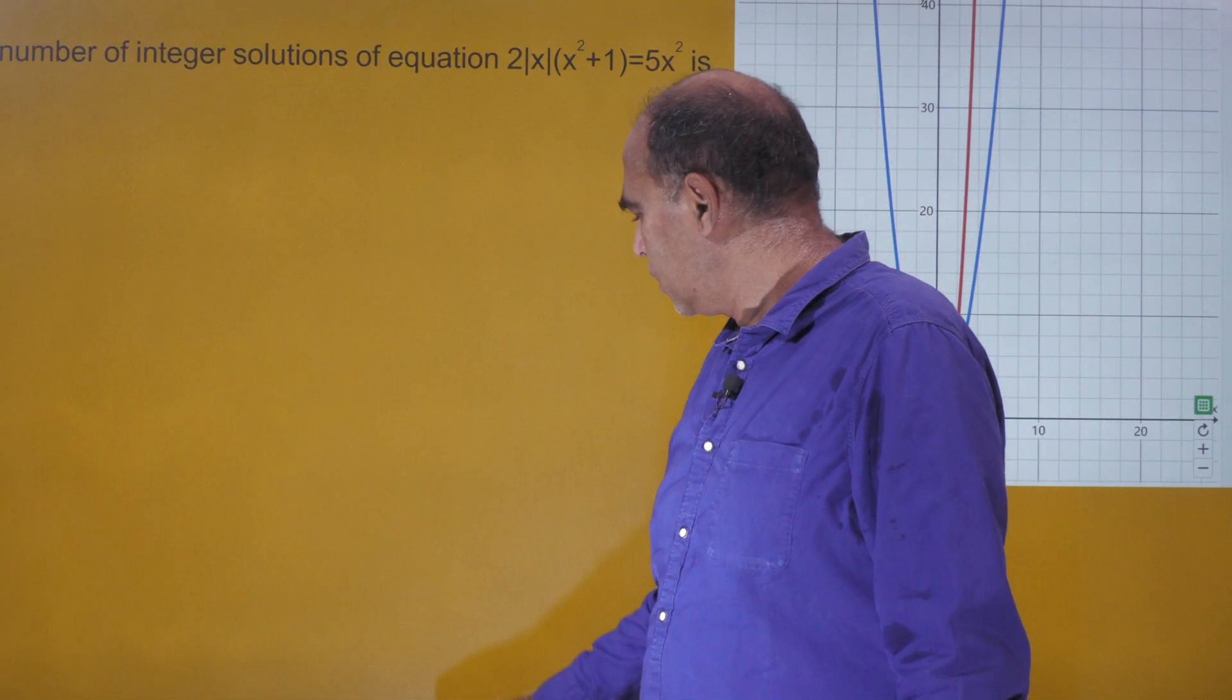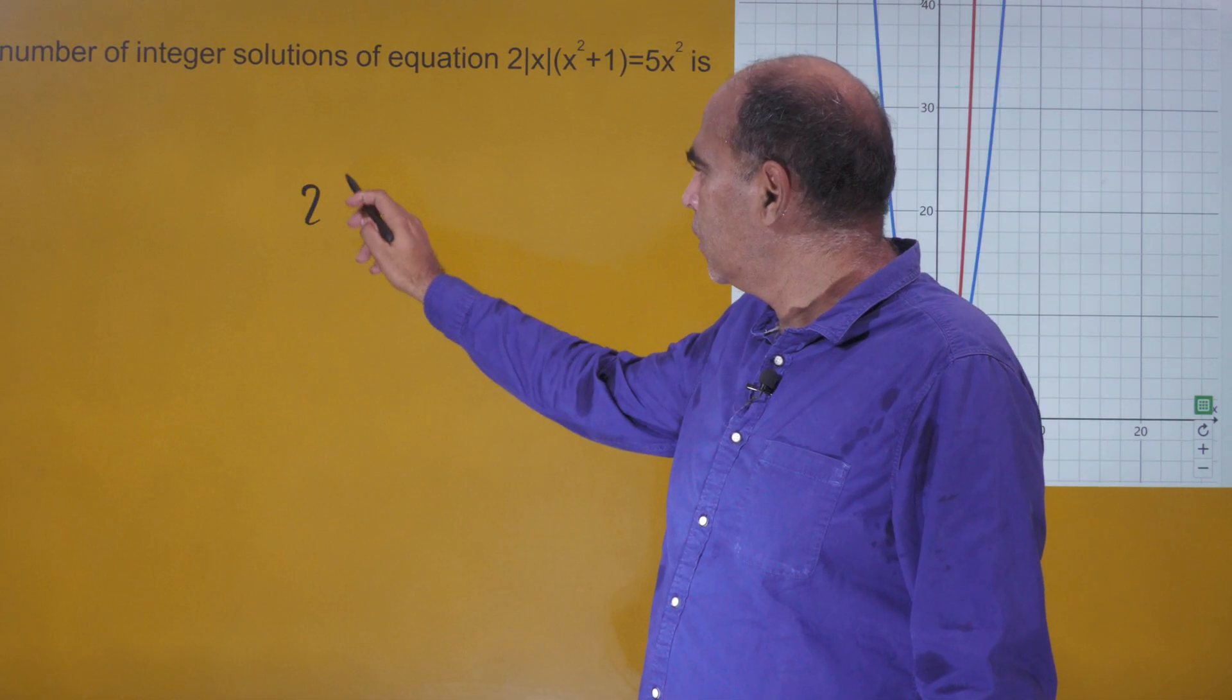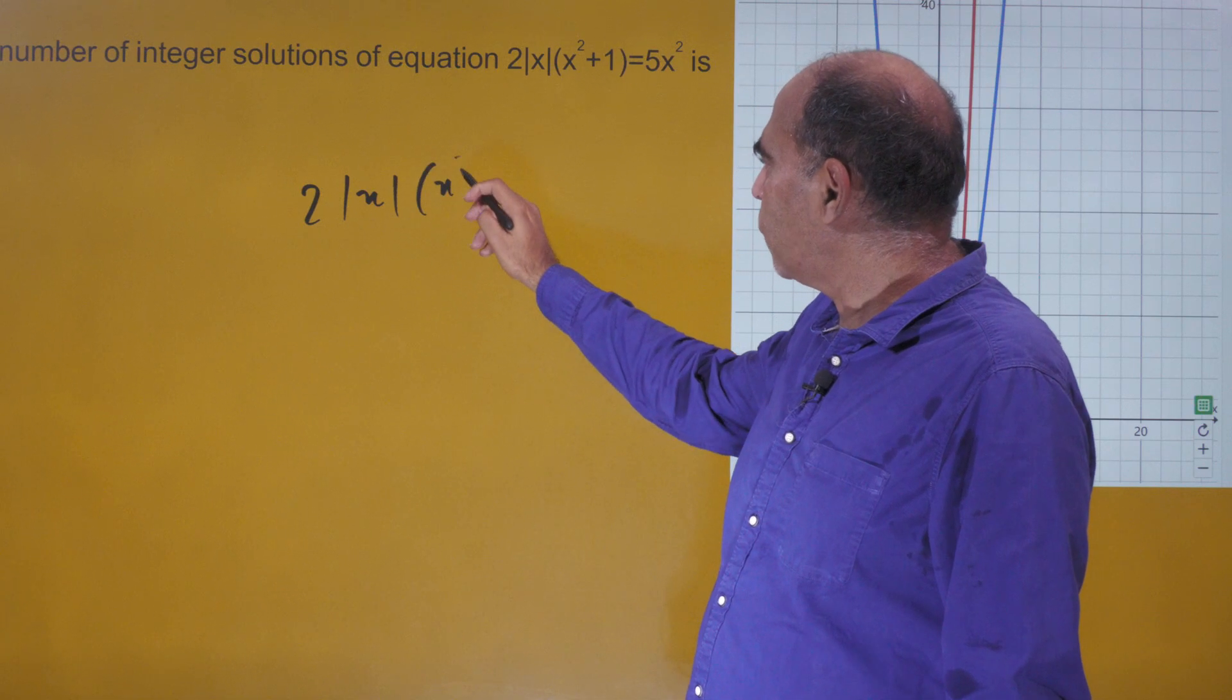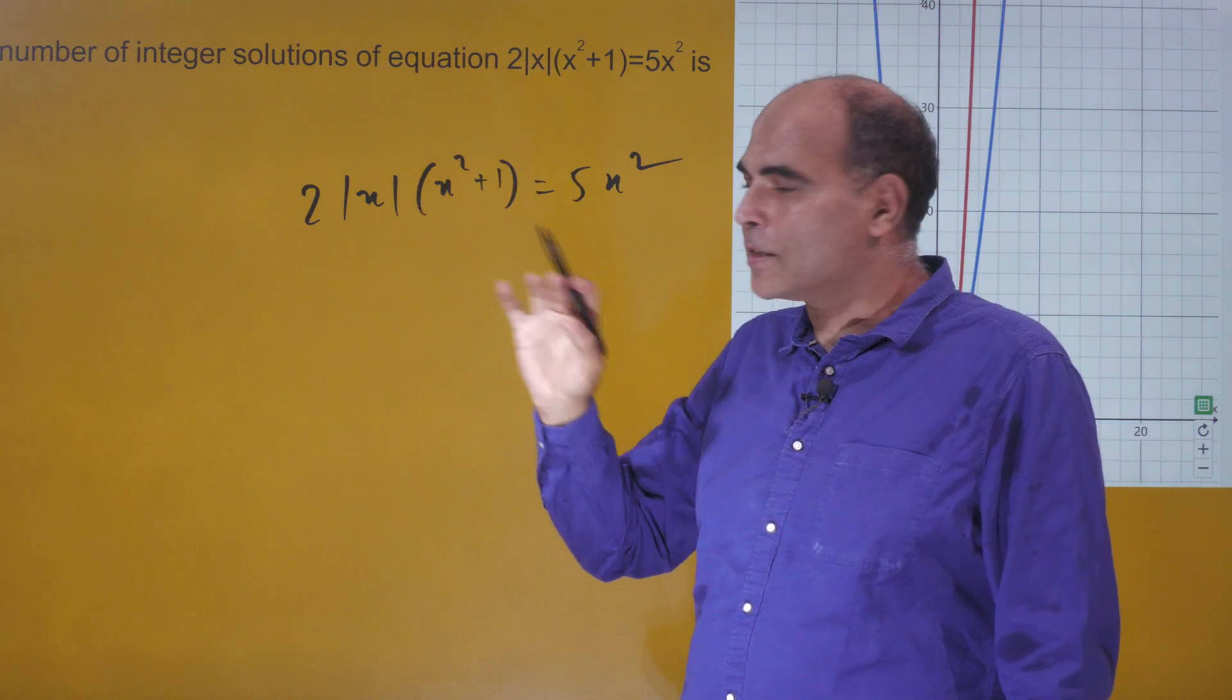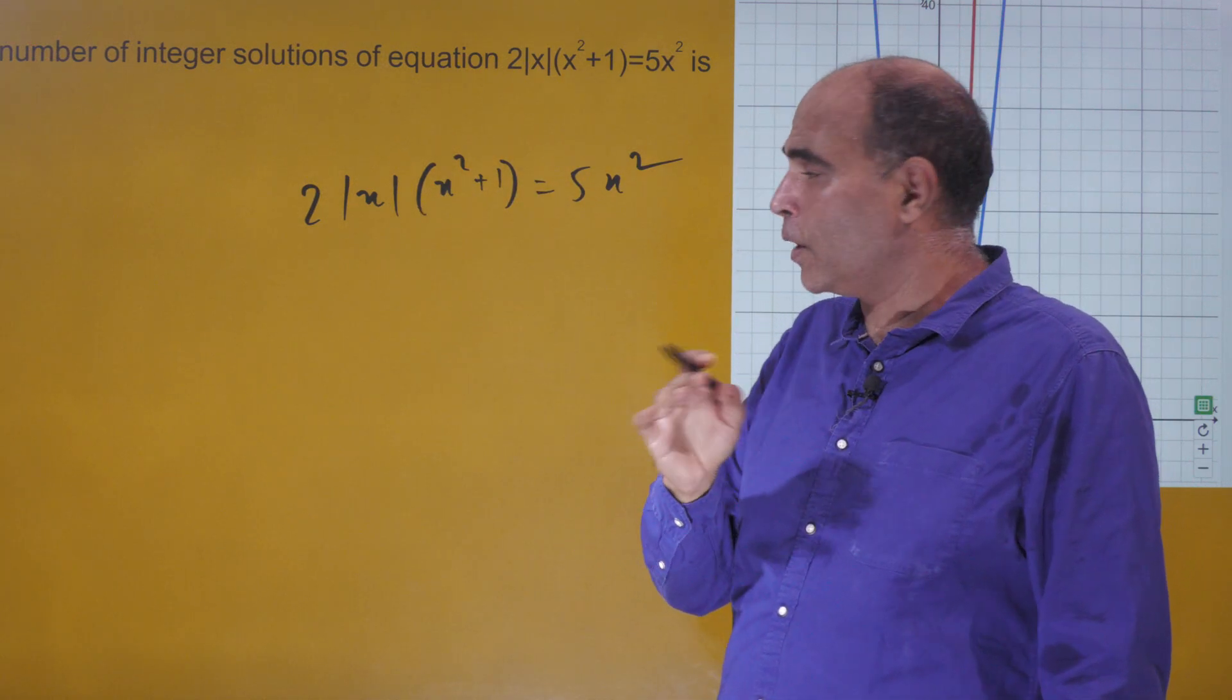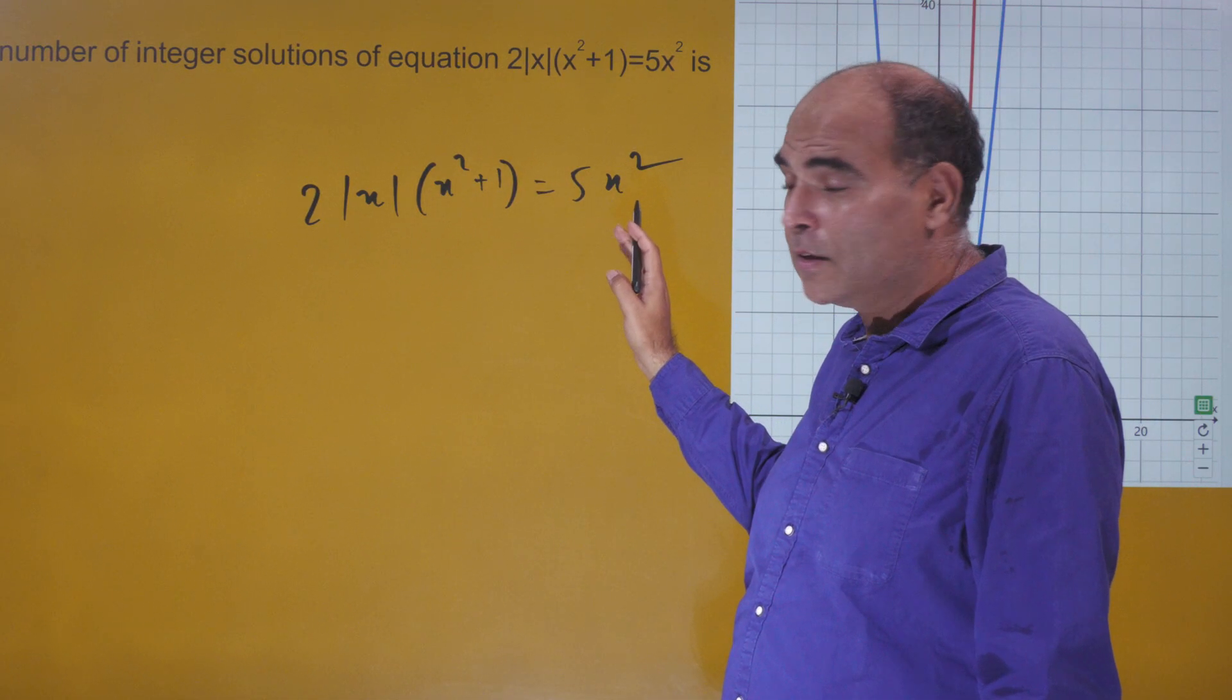Two things you need to notice. The left-hand side is agnostic to whether x is positive or negative, and so is the right-hand side. So if you put x positive or negative, we will get the same outcome because |x| and x² both have that property.